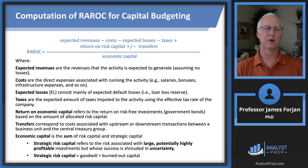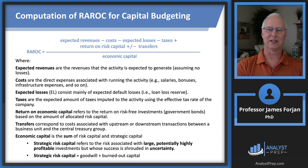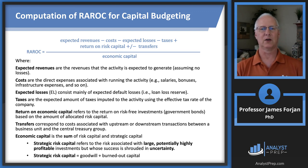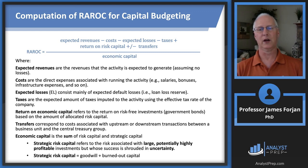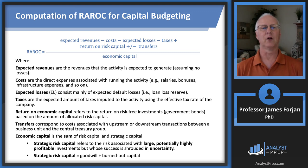The numerator is: expected revenues minus expected costs minus expected losses. Then the government gets involved, so we have a tax liability and tax expense, then a return on that risk capital, and then we add or subtract transfers. On the left-hand side I have definitions for all of those terms. Return on economic capital is the return on risk-free government bonds — US Treasury securities — based on the amount of allocated risk capital.